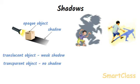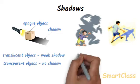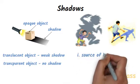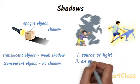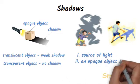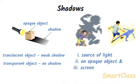To observe a shadow, the following three things are required: a source of light, an opaque object, and a screen.